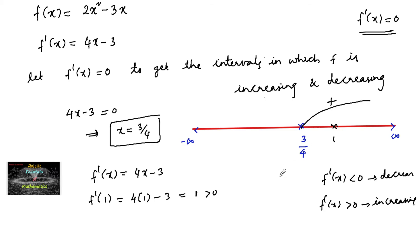And below 3/4, if I take the value 0, f'(0) = 4(0) - 3 = -3, which is less than 0. So we can consider here it is negative.